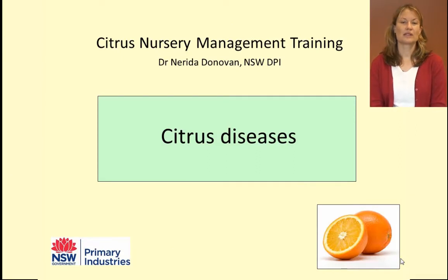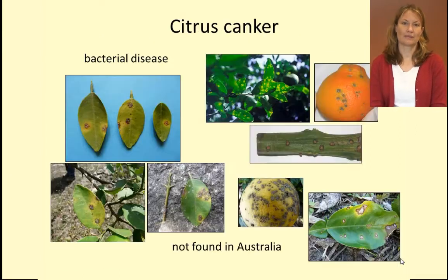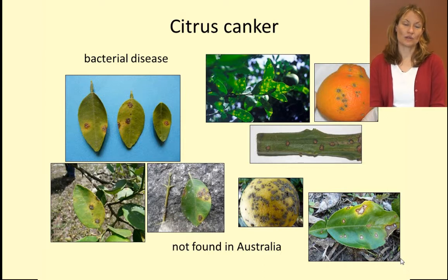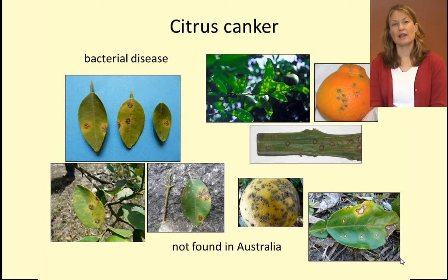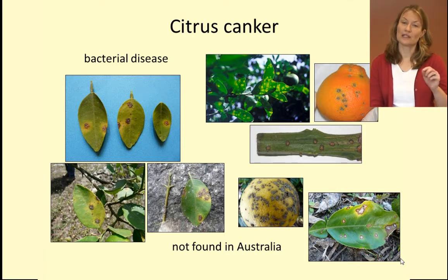Citrus diseases. There are many diseases that you could see in a citrus nursery. These include citrus canker, a bacterial disease that forms spots on the leaves and on the fruit.